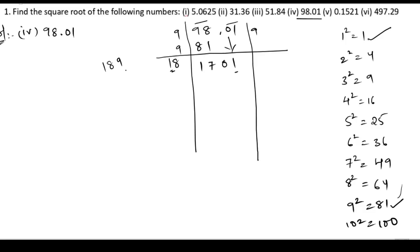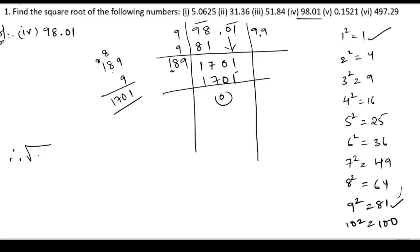So we have 1701. So 189 into 9 gives 1701, with the decimal after one digit. Therefore, the square root of 98.01 is 9.9.